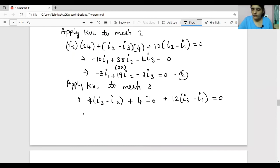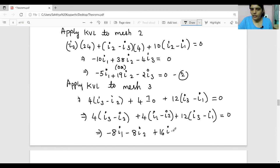We will get 4×(I3 - I2) + 4×(I1 - I2) + 12×(I3 - I1) = 0. Expanding: 4I1 - 12I1 gives -8I1, -4I2 - 4I2 gives -8I2, and 4I3 + 12I3 = 16I3. So -8I1 - 8I2 + 16I3 = 0.